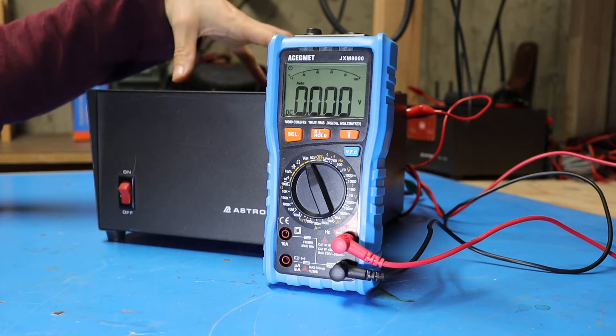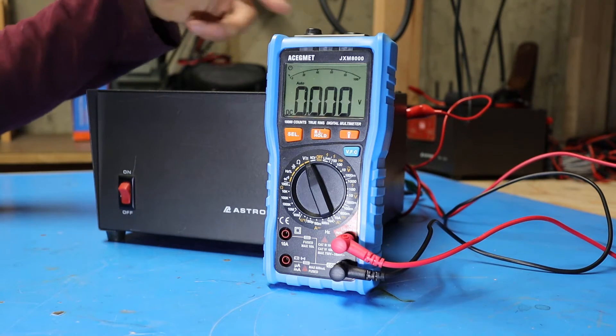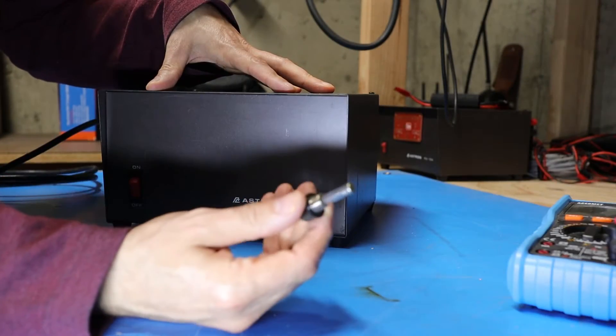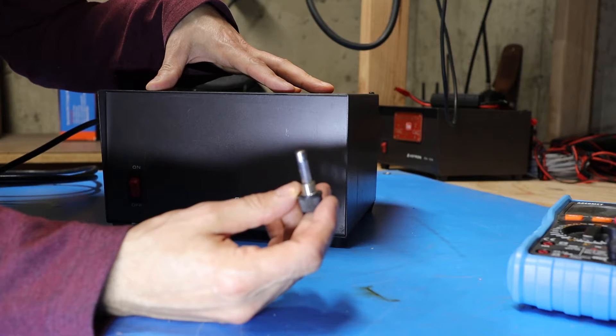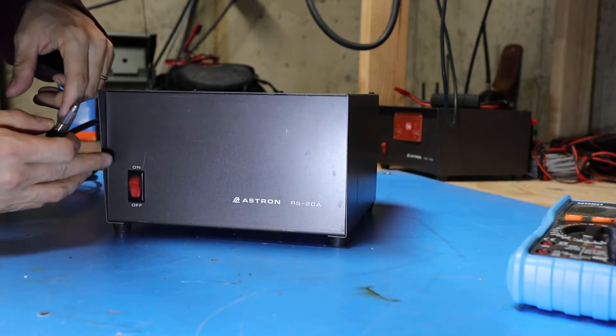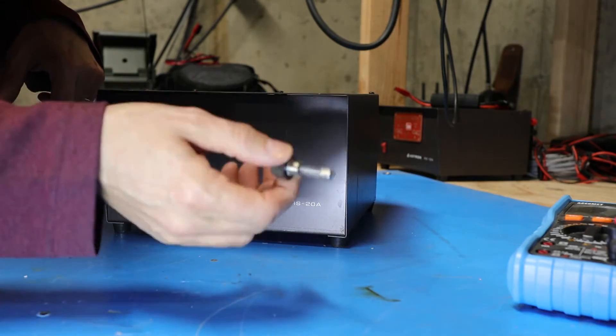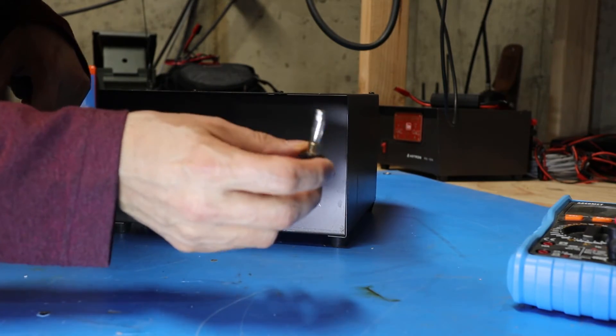So I'm going to unplug this from the AC mains and then pull the cover off and we'll see what's going on inside. Before I pull the cover off, I decided to take a quick look at the main fuse just to make sure it wasn't blown. Although because I was getting light on the switch when I turned it on, I figured it wasn't, but good to check anyway.